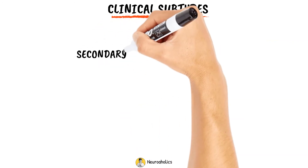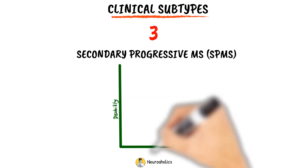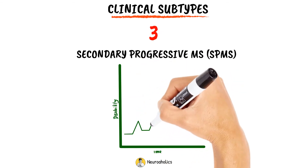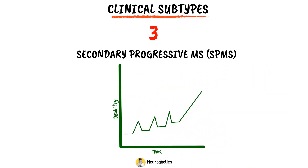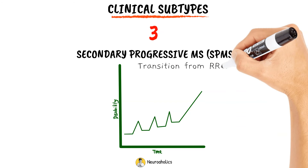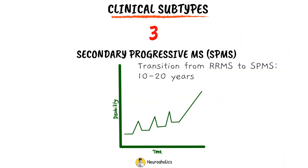Secondary-progressive MS is characterized by an initial relapsing-remitting MS disease course, followed by gradual worsening with or without occasional relapses, minor remissions, and plateaus. The transition from relapsing-remitting MS to secondary-progressive MS usually occurs 10–20 years after disease onset.